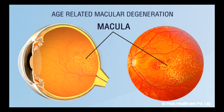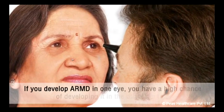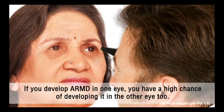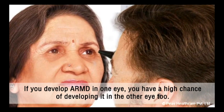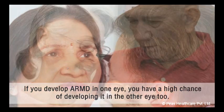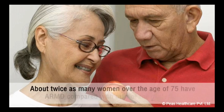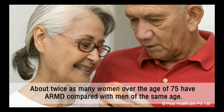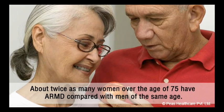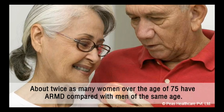ARMD is the most common form of macular degeneration and develops in older people. As the name suggests, it becomes more common with increasing age. If you develop ARMD in one eye, you have a high chance of developing it in the other eye too. About twice as many women over the age of 75 have ARMD compared with men of the same age.